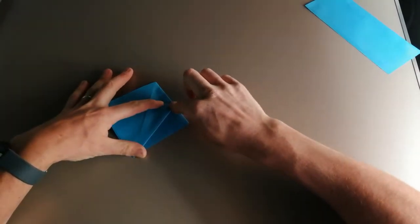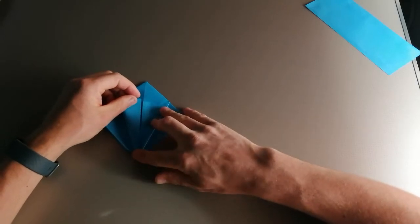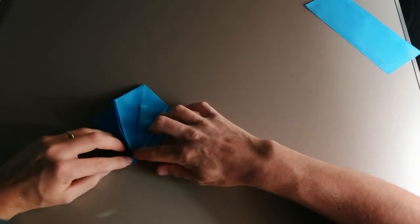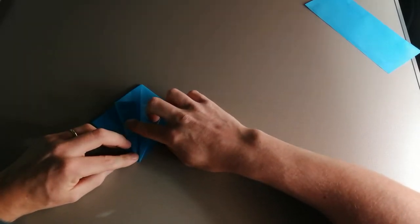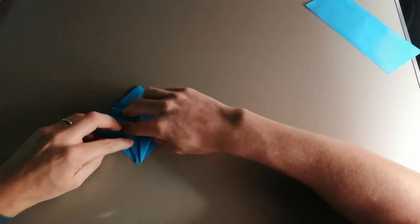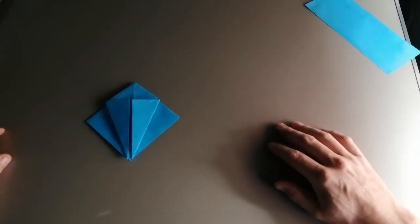So I'm going to take the front flap and bring it in like so. Once I'm happy, score in the crease. I'm going to do the same on the other side, making sure I'm happy with the fold, and then pressing down firmly. So we've got this.